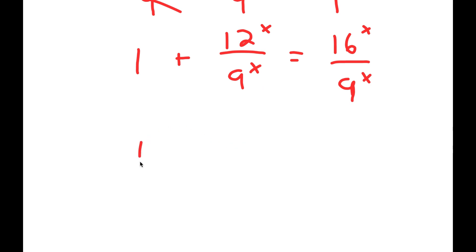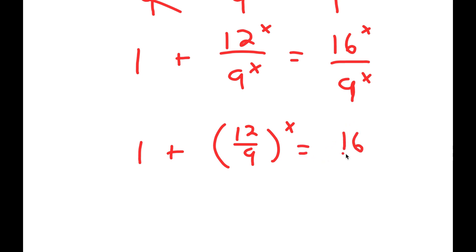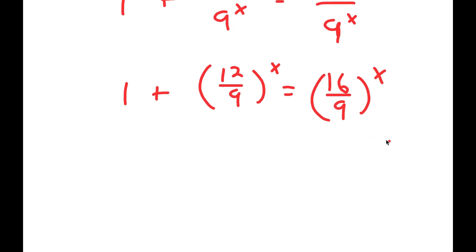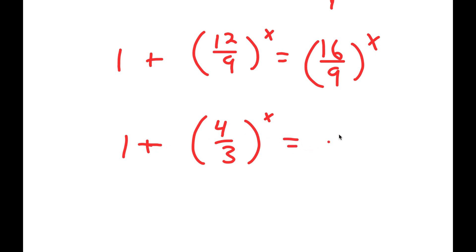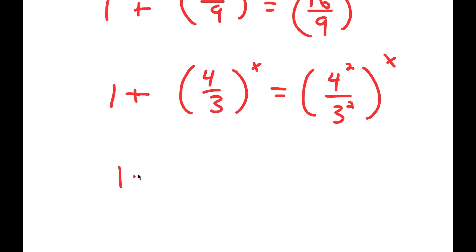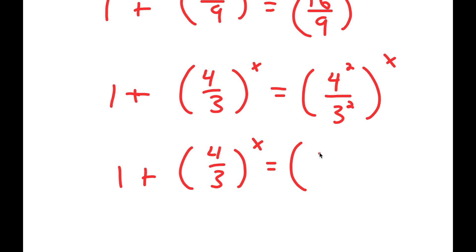From here I can rewrite this as 12 over 9 to the power of x, and 16 to the power of x over 9 to the power of x I can rewrite as 16 over 9 to the power of x. Now 12 over 9 simplifies to 4 over 3, and 16 over 9 simplifies to 4 squared over 3 squared.